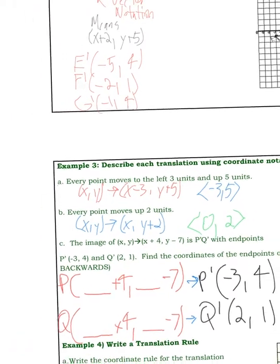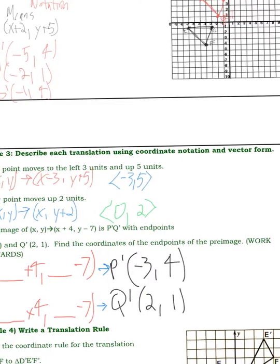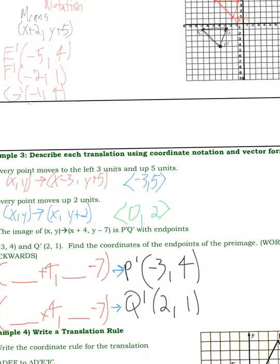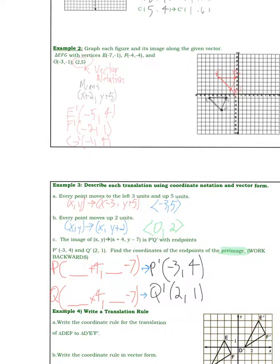All right. So part c, I've written some stuff beforehand. That's because it says the image of x, y moved to x plus 4, y minus 7. And that's at p prime, q prime, with endpoints being at p prime is at negative 3, 4, and q prime is at 2, 1. So find the coordinates of the endpoints of the preimage. So preimage is a keyword there. That means we're going to have to work backwards. We need to find the original answer.